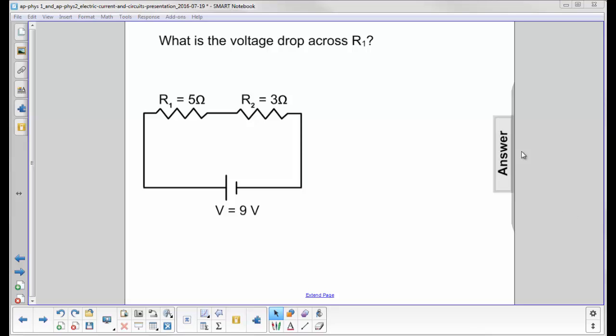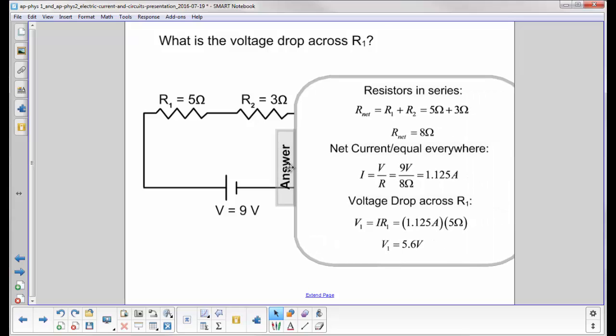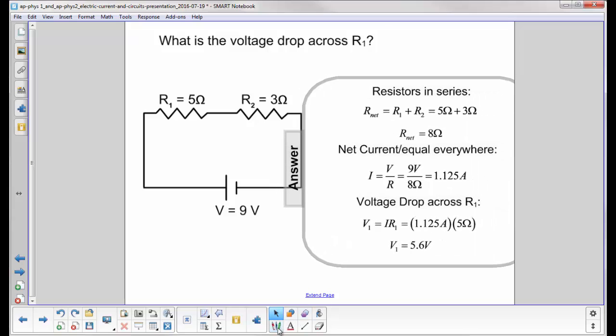What is the voltage drop across R1? We have a series circuit because any charges that leave the battery have to go through both resistors. They don't have a choice. They can't go anywhere else.